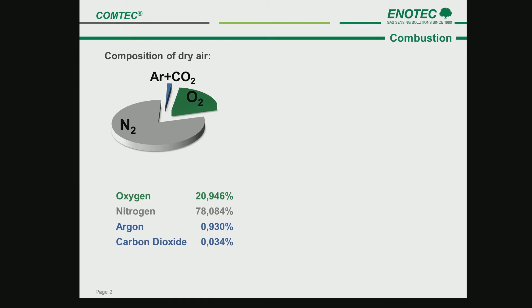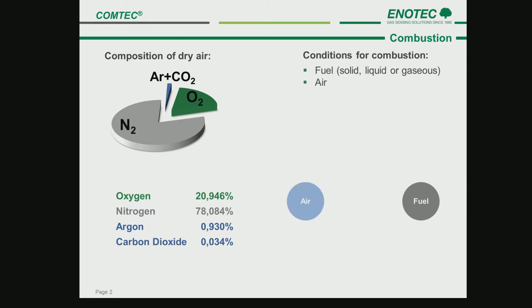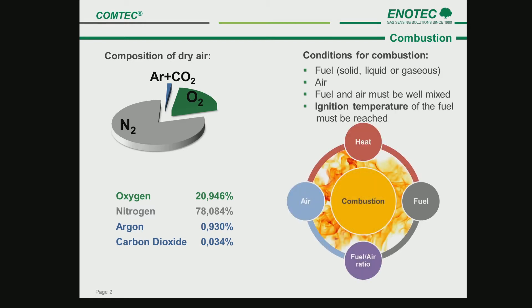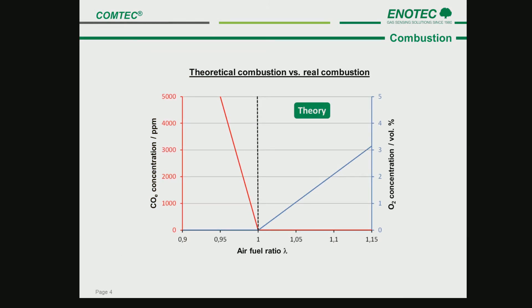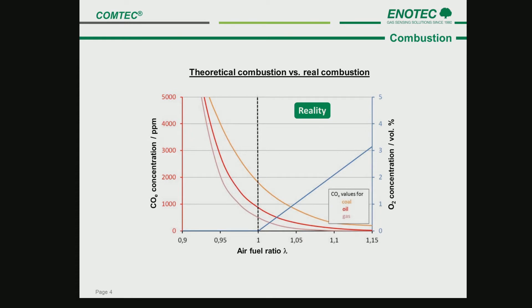Previously in the Oxitec webinar I discussed some combustion basics such as the composition of dry air and the requirements for combustion. I spoke about lambda, which is the ratio of air to fuel in a combustion process. I discussed the theoretical interdependency of O2 and unburned fuel after combustion, and then the interdependency in reality. Already in this graph one can see the importance of measuring COE in addition to O2, showing efficient process values depending on the load and application.